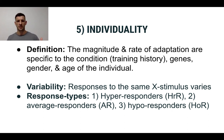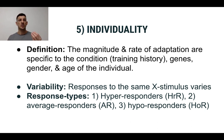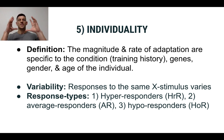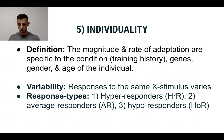And then you get hypo responders — people who, being exposed to the exact same exercise stimulus, don't respond as well. Maybe they only lose one kilogram of fat, pick up one kilogram of muscle, and only develop 10% more strength. You don't know what type of responder you are until you've been on the same program for a long enough period of time.